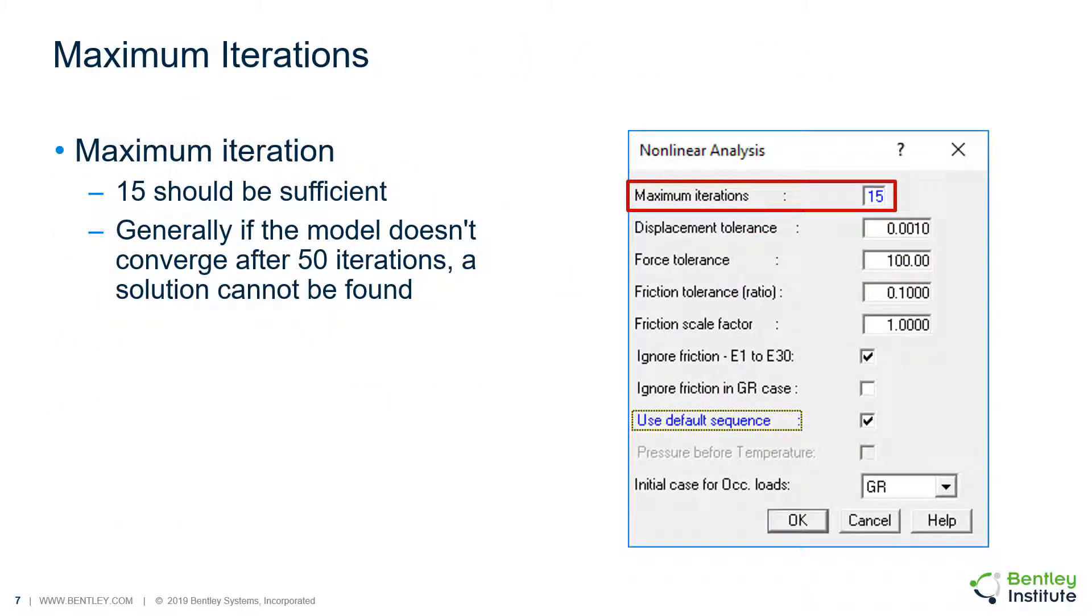Now, we're going to go through the details of the nonlinear analysis settings dialog. The first setting is the maximum iterations, which determines the program's stopping criteria. For the maximum iterations, 15 iterations should be sufficient.